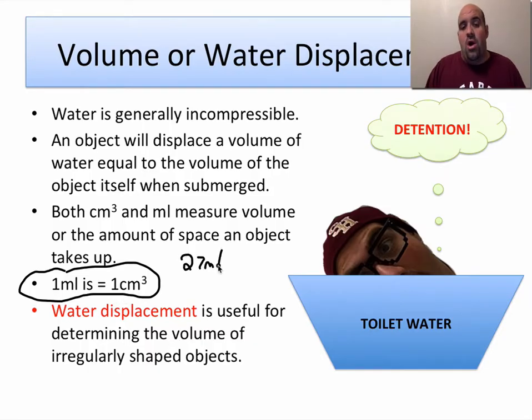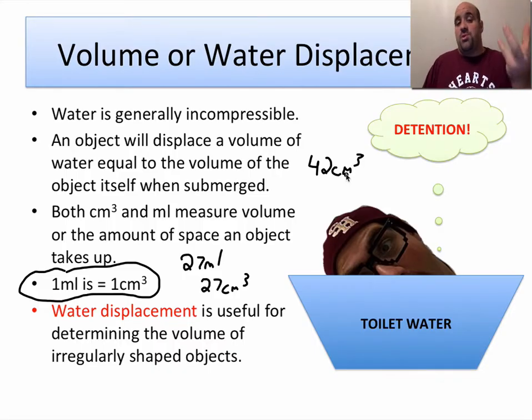Water displacement is useful for measuring the volume of irregularly shaped objects. And anytime you put an object in water it's going to displace the same volume of water that the object itself has. So if you put an object in there that's say 42 centimeters cubed, it should displace 42 milliliters of water or 42 centimeters cubed of water. So that's a cool rule of thumb that allows us to do some cool things.